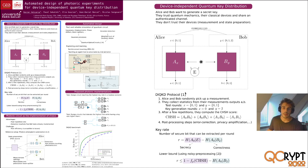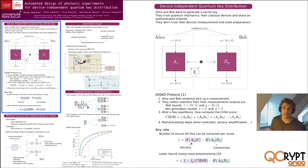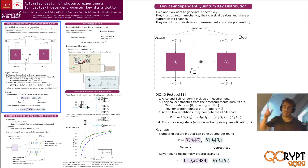A key quantity in the DIQKD protocol is the key rate — the number of secure bits that can be extracted per round. It is labeled R, and it can be seen as the difference between a quantity called the secrecy, which is the uncertainty that Eve has on the shared key, minus the correctness, which can be thought of as the difference in the keys between Alice and Bob. The first quantity is really hard to compute because Eve is assumed to have unlimited computational power. So instead, we use a lower bound on this quantity that uses the CHSH score directly — a simple function of the CHSH score.